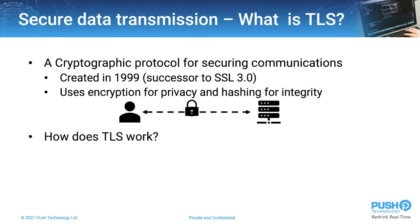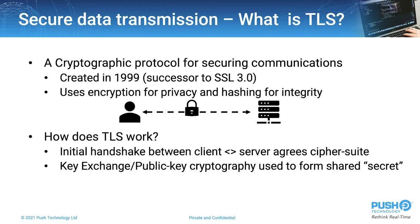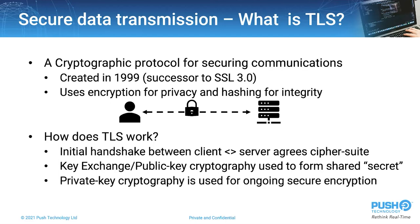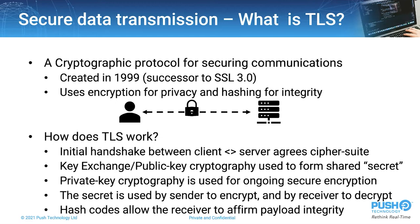We'll briefly look at how TLS works, as this is important as we dig into the details of TLS and why Diffusion provides extra security. Initially, the client and server agree on the cipher suite they're going to use. They then agree a shared secret — essentially a key that will be used for ongoing traffic. The private key is used to secure all traffic going over the channel, used by the sender to encrypt and by the receiver to decrypt. Hash codes are then used by the receiver to make sure the payload hasn't been modified in transit, which is a common vector for attack.